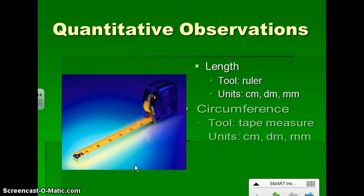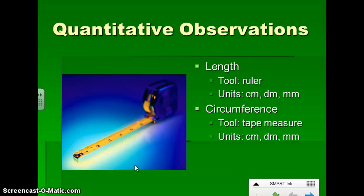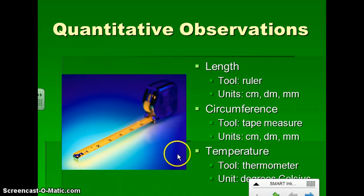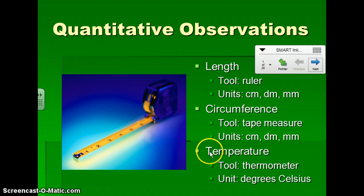Back to our quantitative observations. We measure length using a ruler, and we use the metric system, so centimeters, decimeters, millimeters, you get the idea. For circumference, you can use a tape measure, or we might use a piece of string and a ruler, and those are the same units that we'd use for length. We will also be taking temperature from time to time, and we're going to use a thermometer for that, measuring in degrees Celsius.